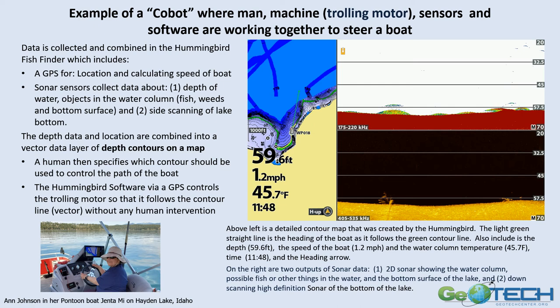An example of a cobot is a pontoon boat setup: an interaction between a person, a machine — the trolling motor — sensors, and software all working together. GPS is collected using a Humminbird fish finder, which has sonar sensors that collect data about water depth, objects in the water column, and the bottom surface, plus side-scanning sonar for the lake bottom. As you drive the boat along the water's surface, the Humminbird develops a depth contour map showing the shoreline and various contours.